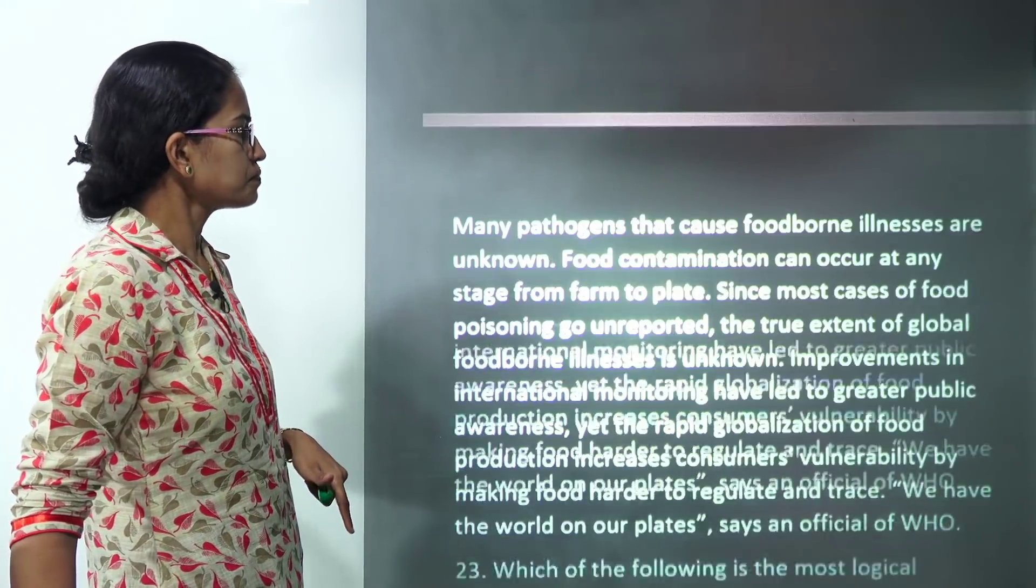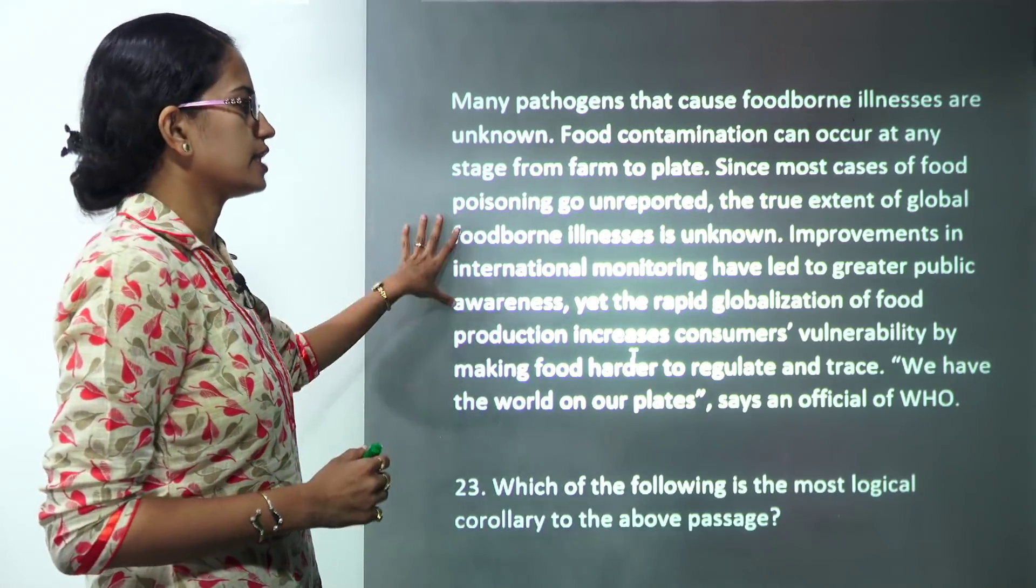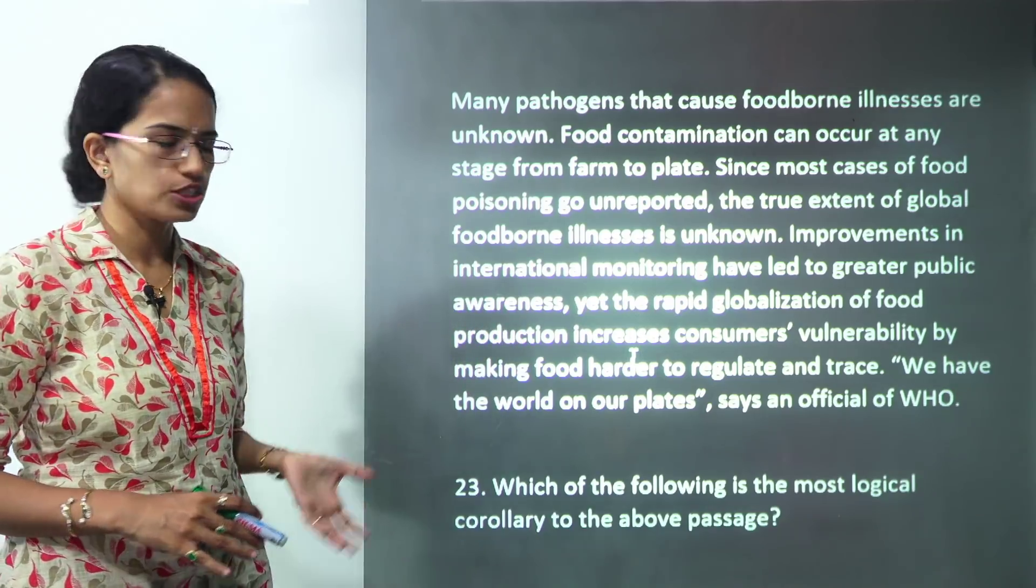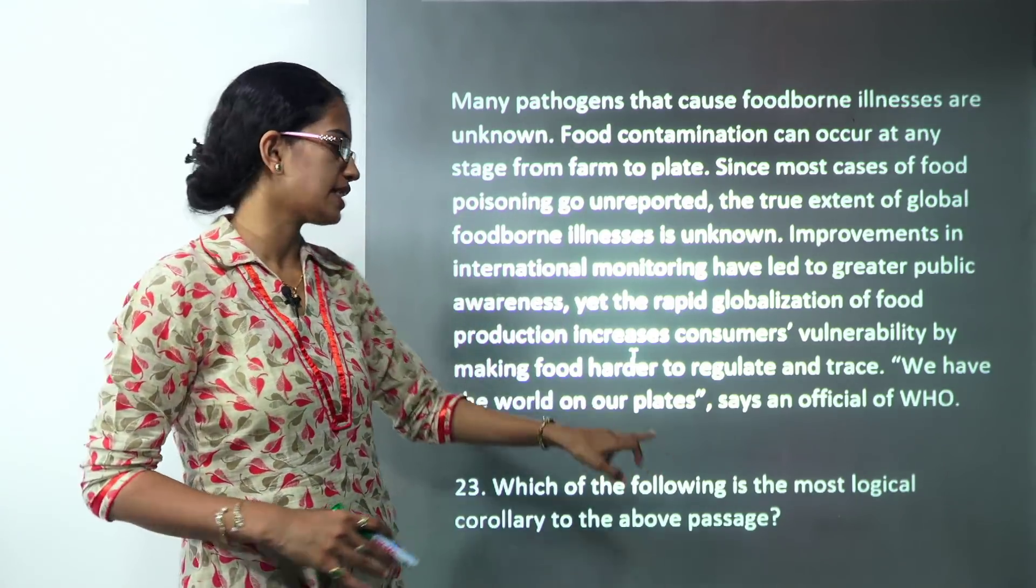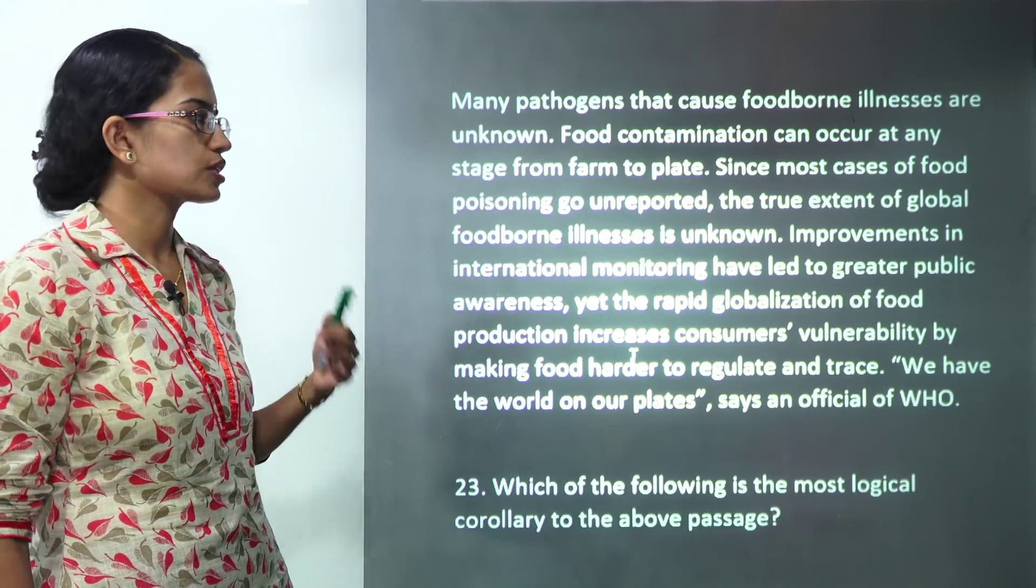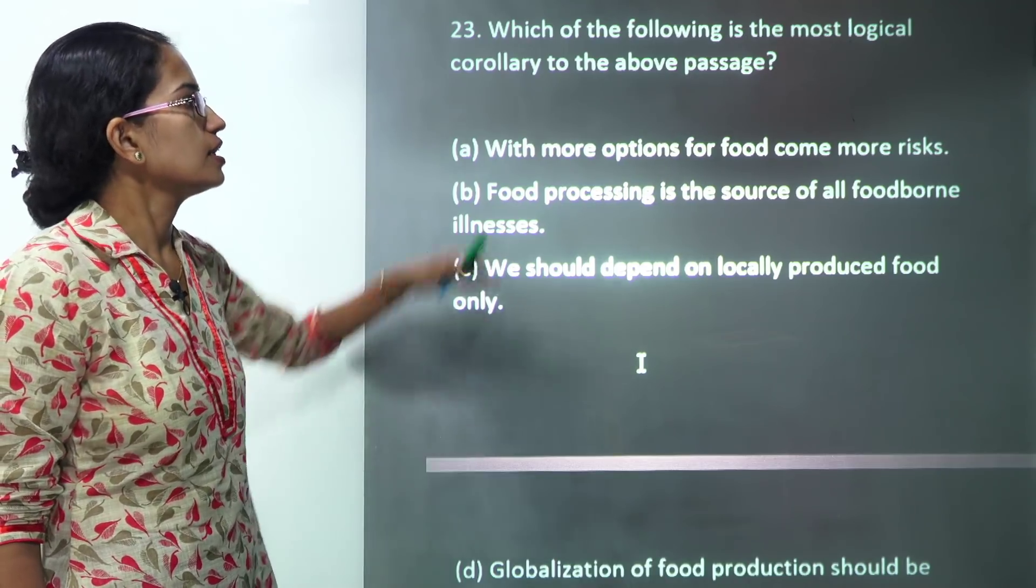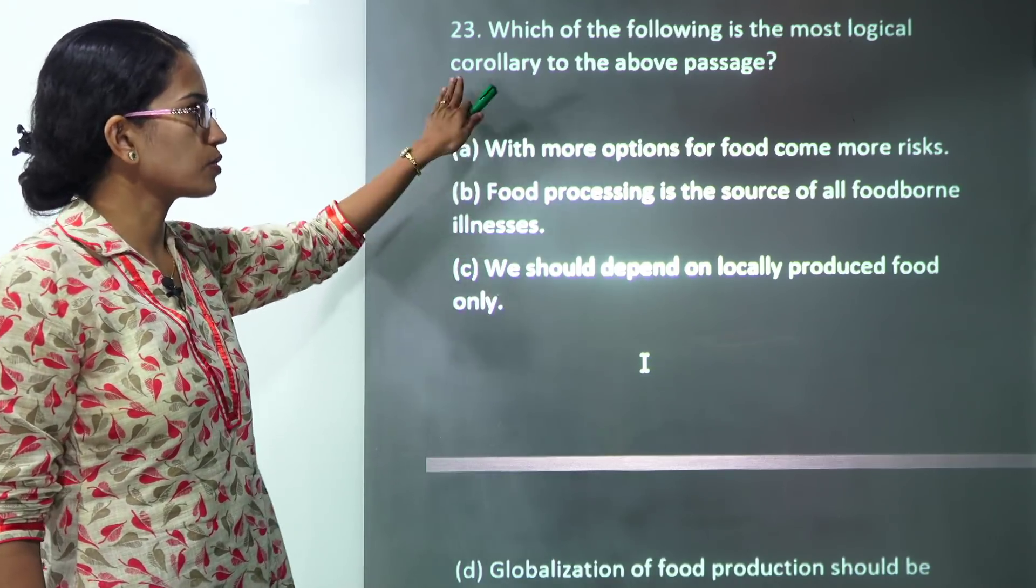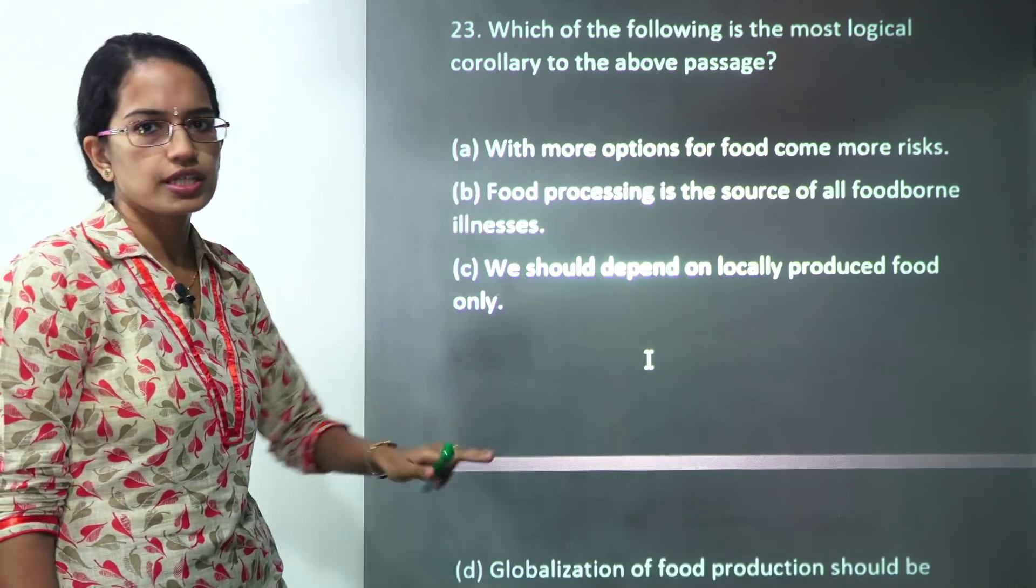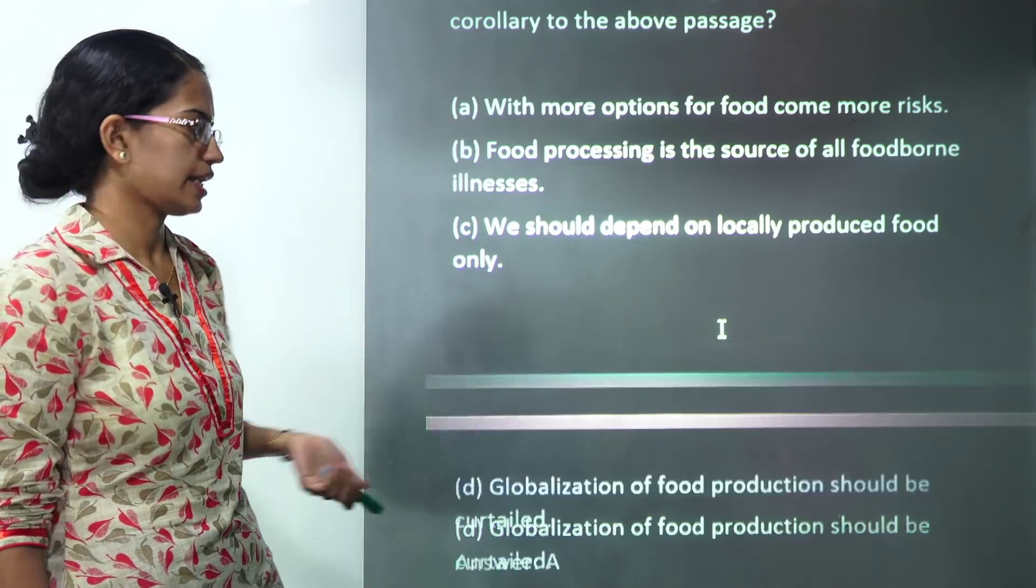The second passage talks about food contamination and food poisoning. It says now with international monitoring we have more public awareness, yet we have food supplies coming in from across the globe. So when we have the world on our plates, that's what the WHO has said, we have the illness coming in from any number of sources. It's hard to report actually from where the illness or contamination is coming in. Which of the following is the most logical conclusion? With more options of the food comes the more risk. So A becomes the correct option here.